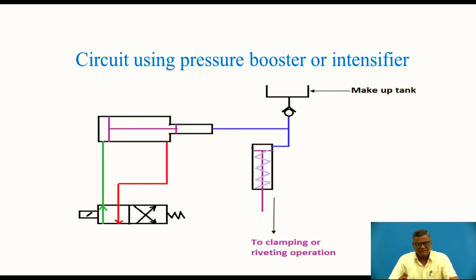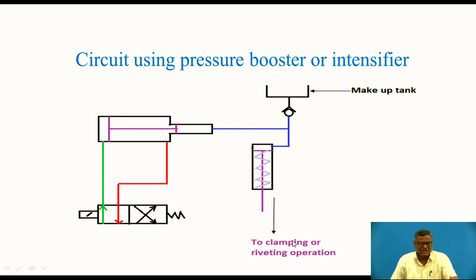In clamping or riveting operations, the tail of the rivet is converted into a head-like structure and plates are joined with the rivet. In operations like clamping, or multi-point cutting tools such as milling where a number of surfaces are machined at a time, very high forces are needed. In all these cases where high pressure or high force is required, we use intensifiers.